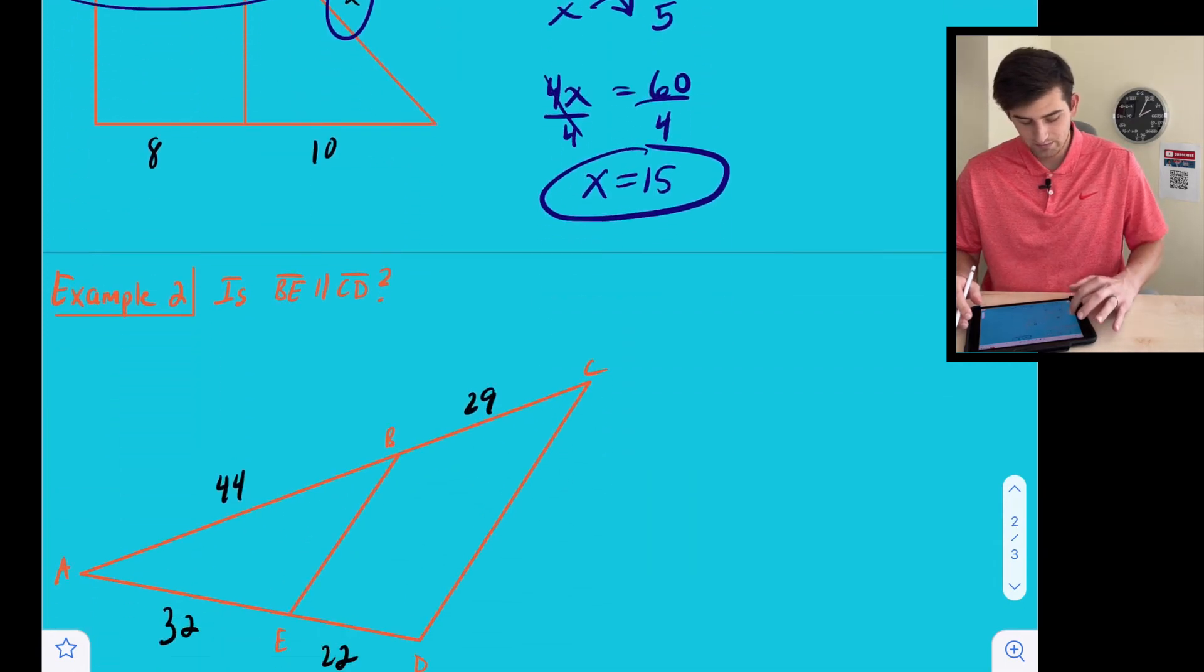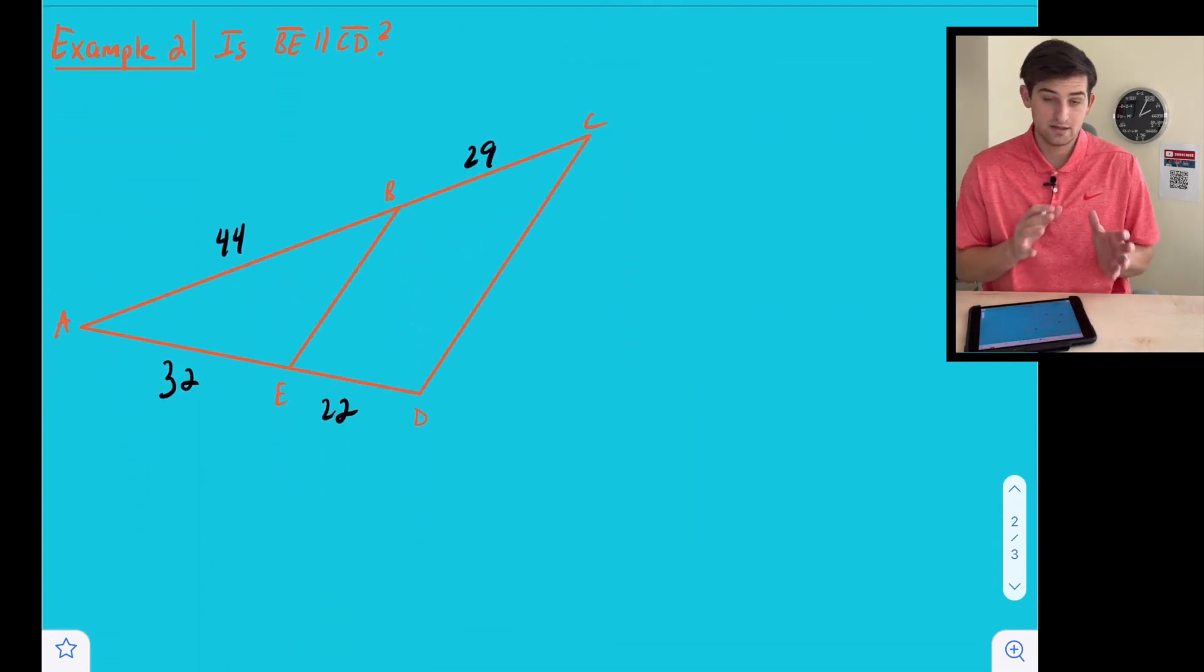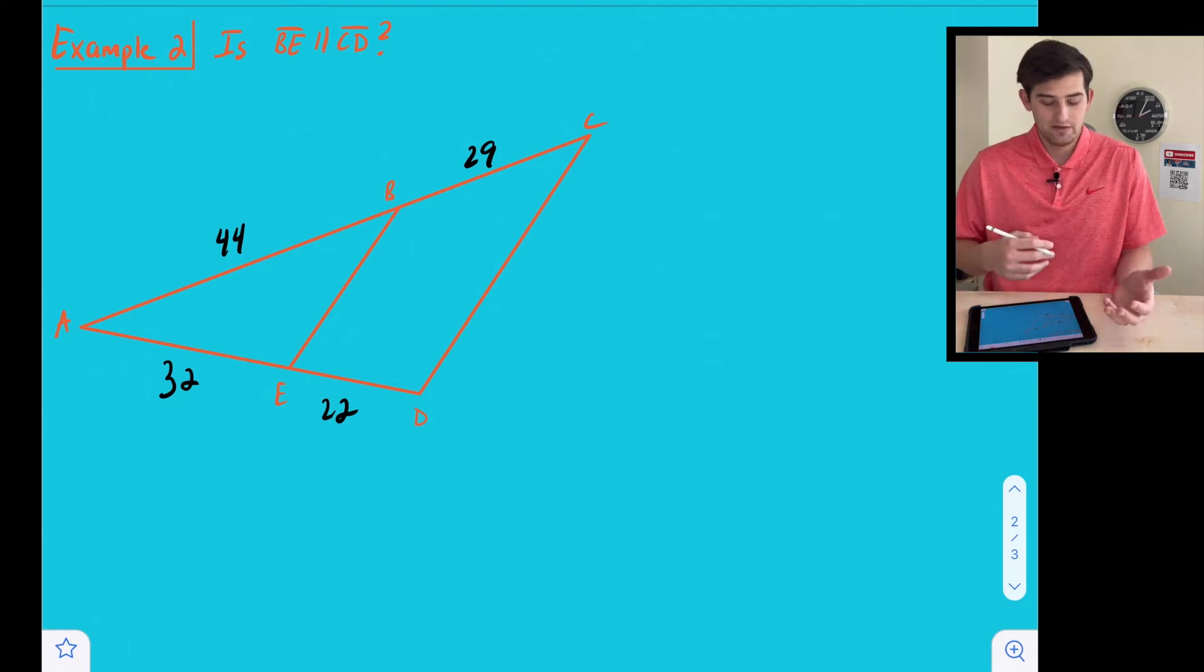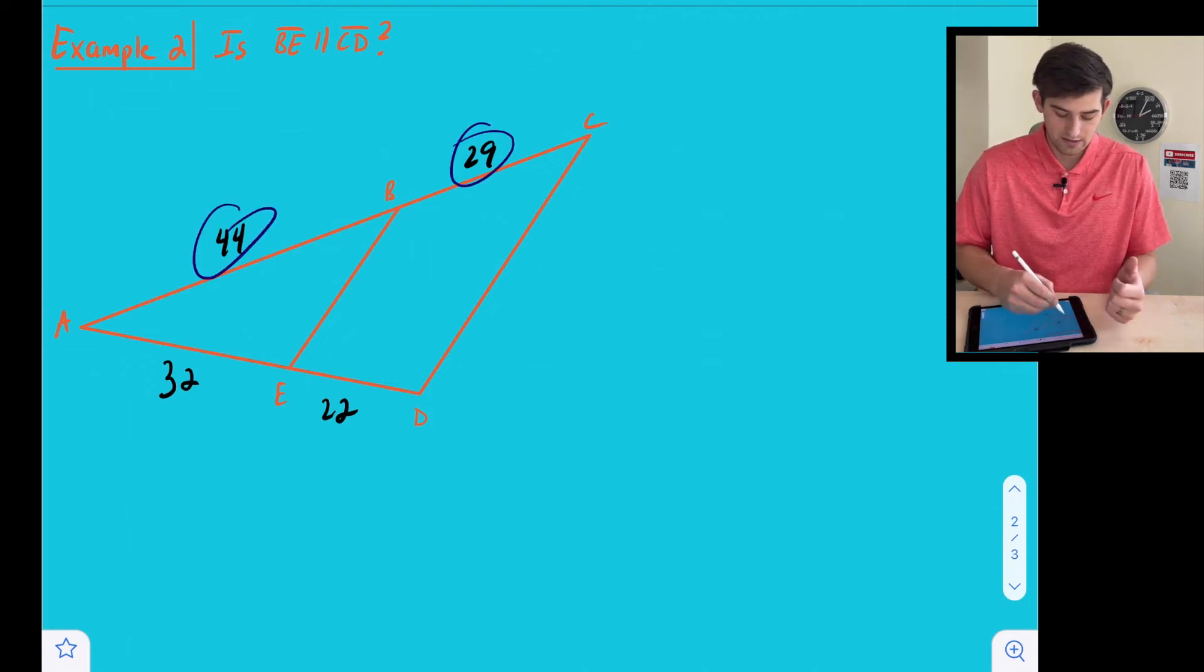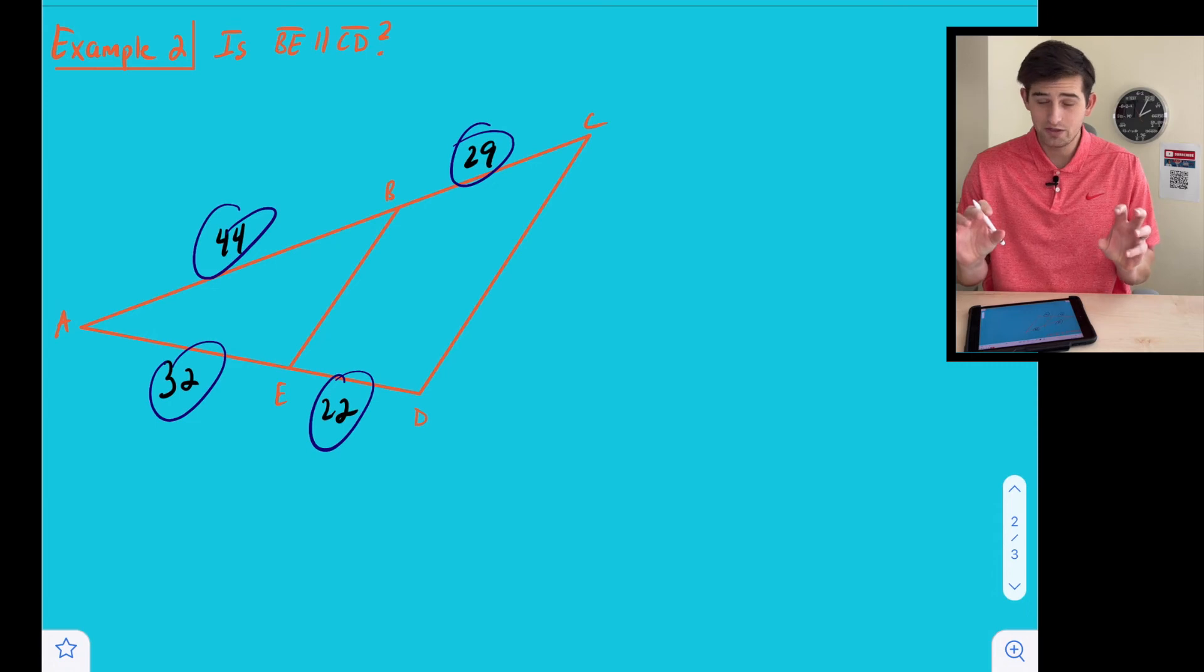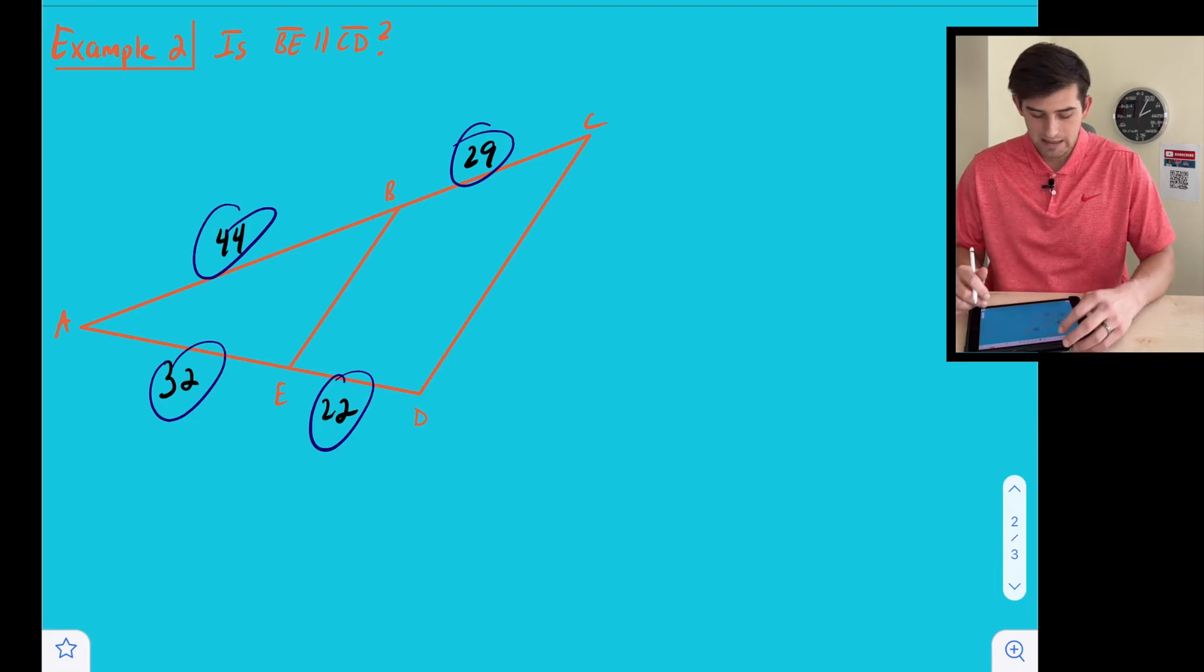Now let's look at this next example. Now they ask us: is segment BE parallel to segment CD? And notice what they give us this time. We get the side lengths. So all we have to do is set up our proportion, cross multiply, and if our sides are equal to each other, then we know that yes they are parallel. If they're not equal to each other, then we're going to say no, not parallel.